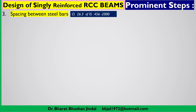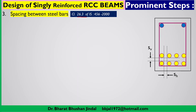The third design step is spacing between steel bars (tensile reinforcement), covered under clause 26.3 of IS 456. Both horizontal spacing (SH) and vertical spacing (SV) between bars must be determined. Proper spacing ensures proper compaction of concrete: if bars are too close (say 5 mm apart) and the aggregate is 20 mm, concrete cannot reach the lower levels, causing poor compaction. Adequate spacing also improves bond between steel and concrete.